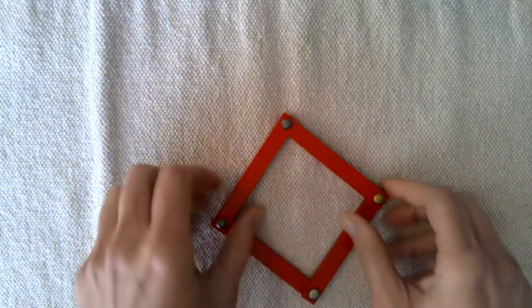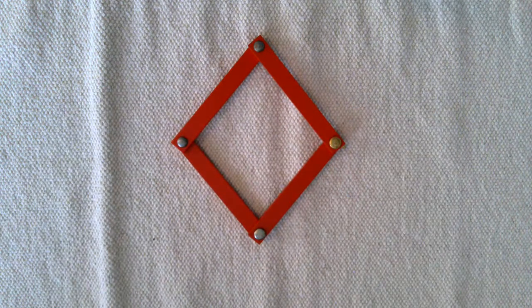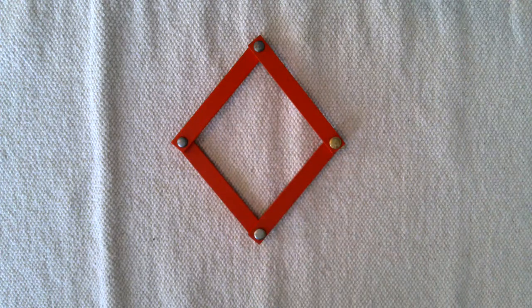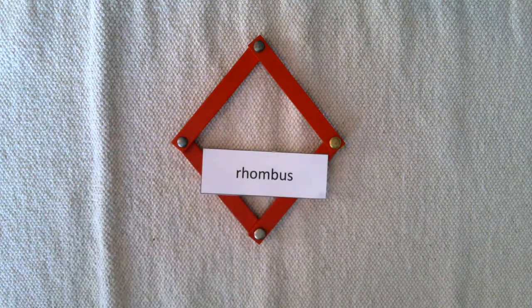This time we're going to build a figure with four sticks of the same color. What are its characteristics? It has two pairs of parallel sides and two pairs of equal angles. This is a rhombus.